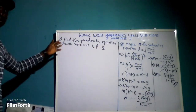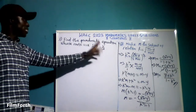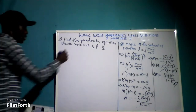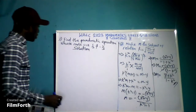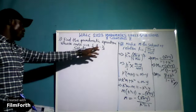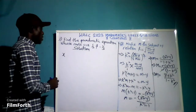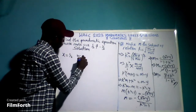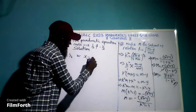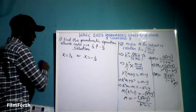Now let's take a look at question number 3. We are asked to find the quadratic equation whose roots are one-half and negative one-third. The variable x will be equal to one-half or negative one-third.